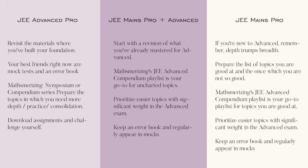For students with mixed JEE Mains and Advanced preparation, first revise what you have already mastered for advanced, going back to your source material. Then prepare topics you have not yet studied. You can go to the JEE Advanced compendium playlist, select uncovered topics and start preparing them one at a time. Cover the entire theory for each chapter, but be selective with problem solving since they contain many problems. Prioritize easier topics with significant weightage in the advanced examination.